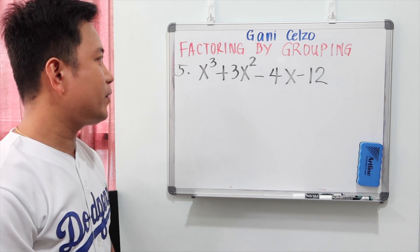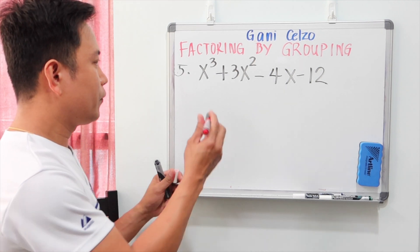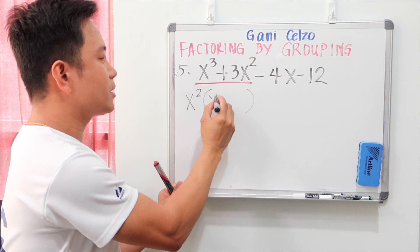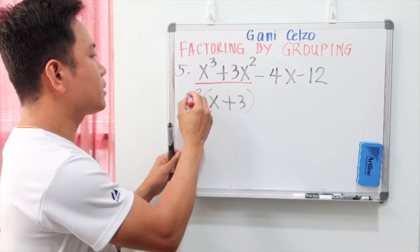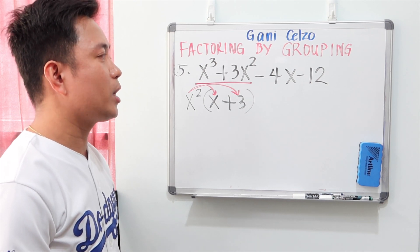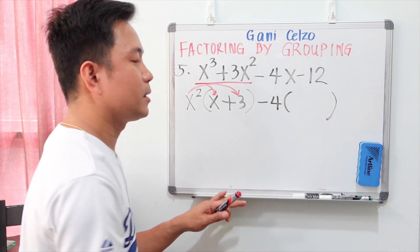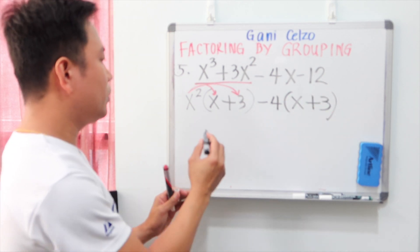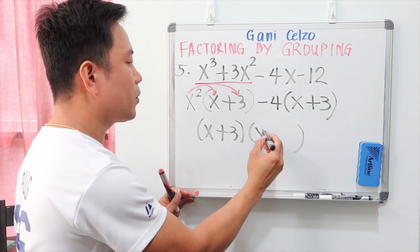Let's look at example 5: x cubed plus 3x squared minus 4x minus 12. There's no need to regroup. For the first group, the GCF is x squared, giving x squared times (x plus 3) — that produces x cubed and 3x squared. For the second group, negative 4x minus 12, the GCF is 4, but we write minus 4 outside the parentheses. Be careful with the sign — inside we have x plus 3. Now x plus 3 is common to both groups, and the outside terms are x squared and minus 4.